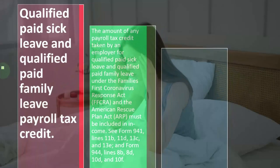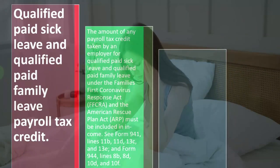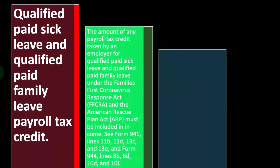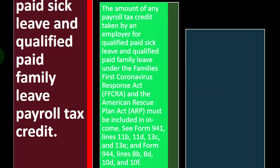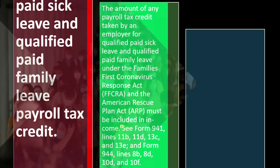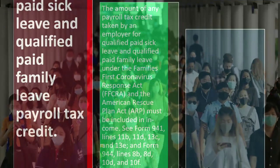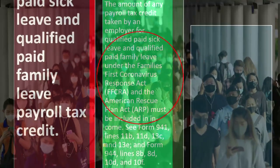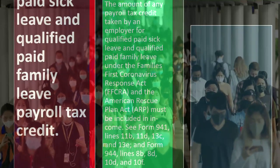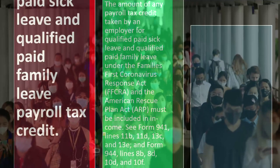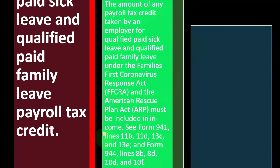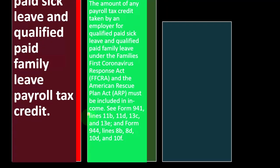Qualified paid sick leave and qualified paid family leave payroll tax credit: the amount of any payroll tax credit taken by an employer for qualified paid sick leave and qualified paid family leave under the Families First Coronavirus Response Act (FFCRA) and the American Rescue Plan (ARP) must be included in income. See Form 941 — the payroll form — specifically lines 11B, 11D, 13C, and 13E, and Form 944 lines 8B, 8D, 10D, and 10F.